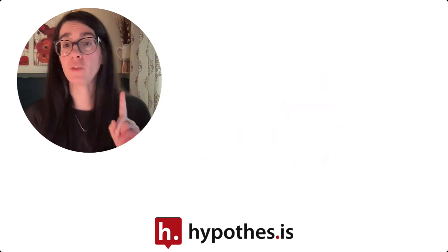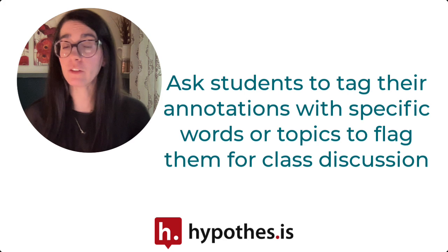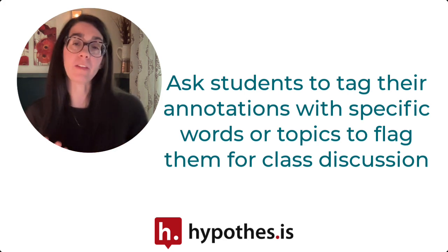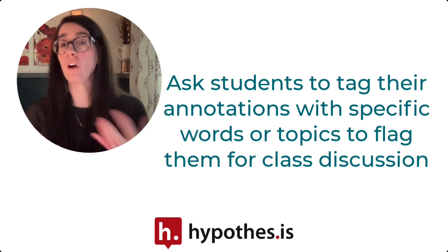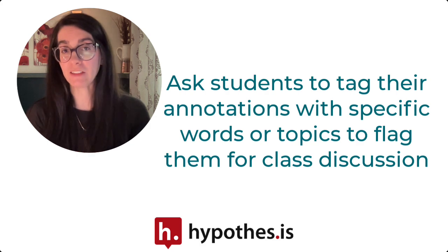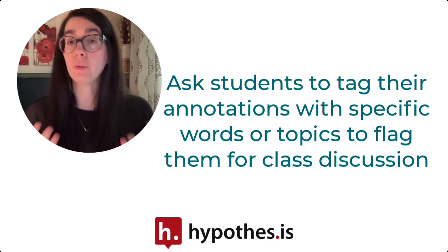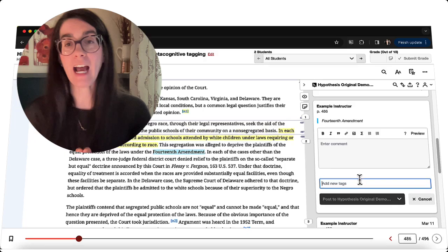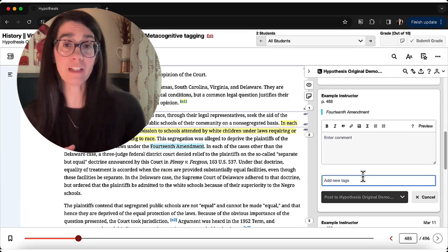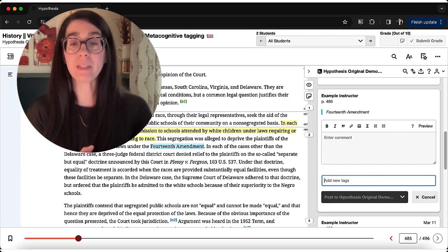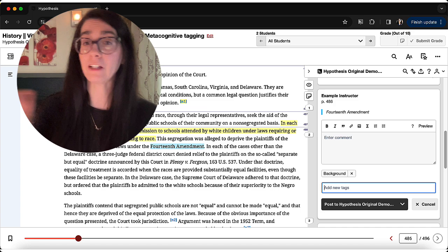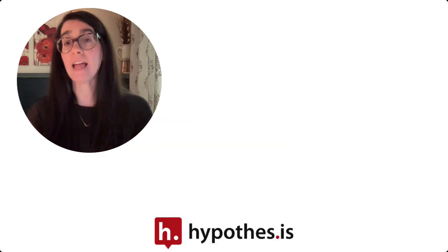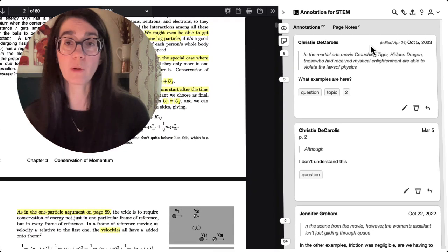In strategy one, students can tag their annotations with certain words to indicate that they'd like to talk about the topic in class. For example, you could have students use the tag 'question' if they have a question they'd like reviewed in class, or simply add the word 'discussion' to the tags to flag it as a topic they'd like to explore more.